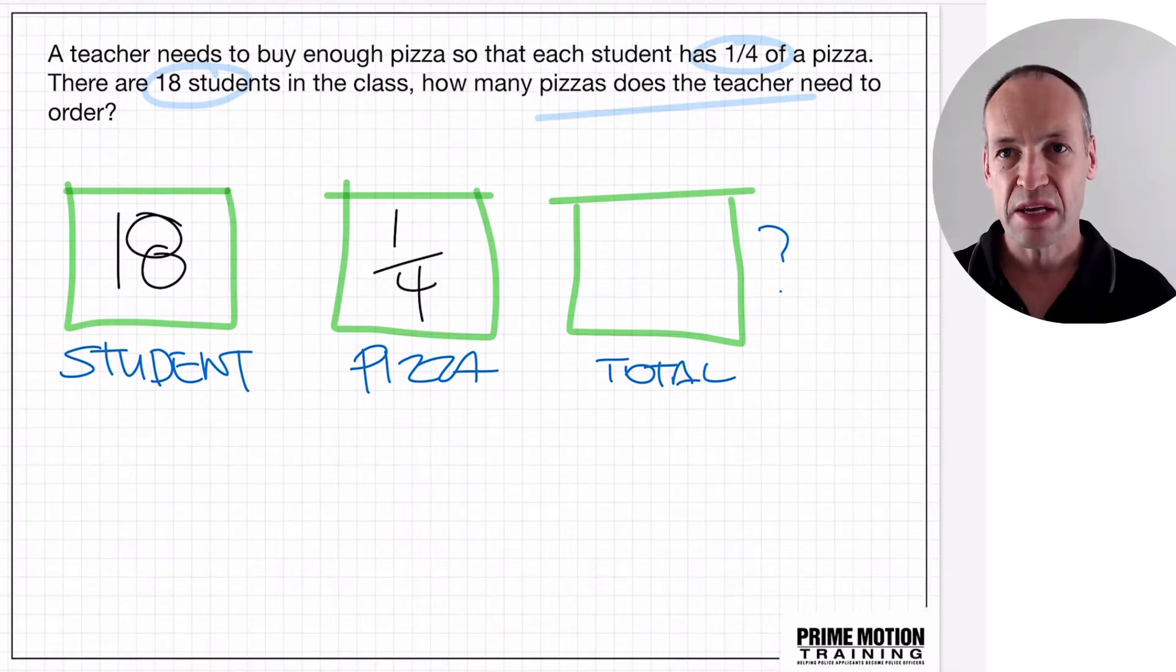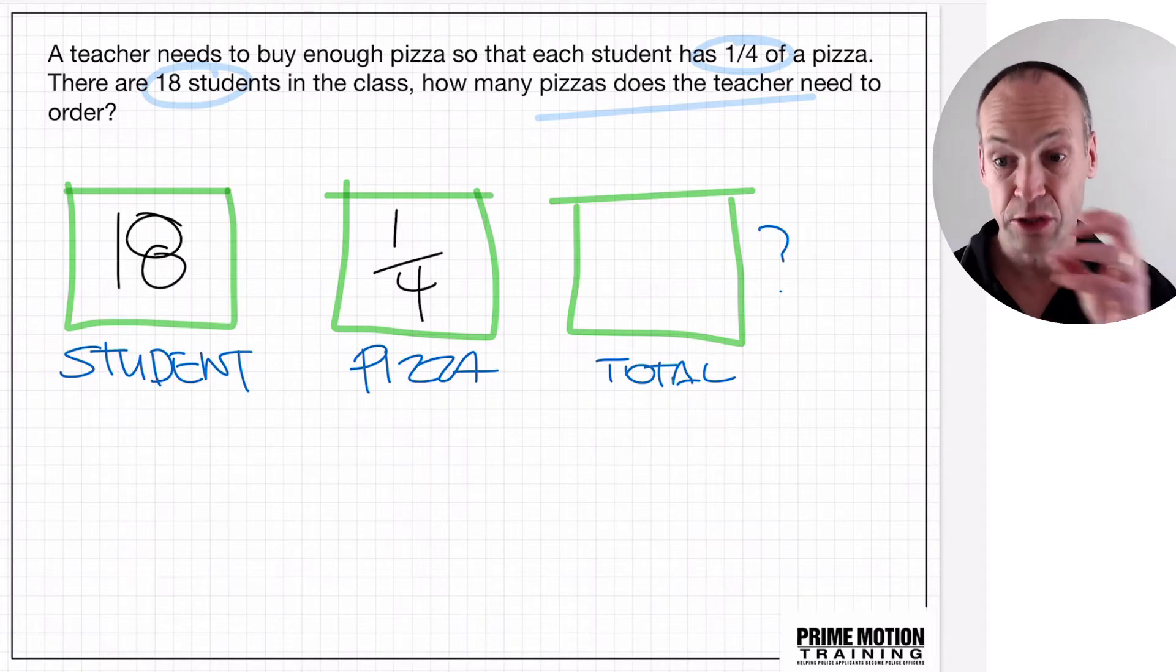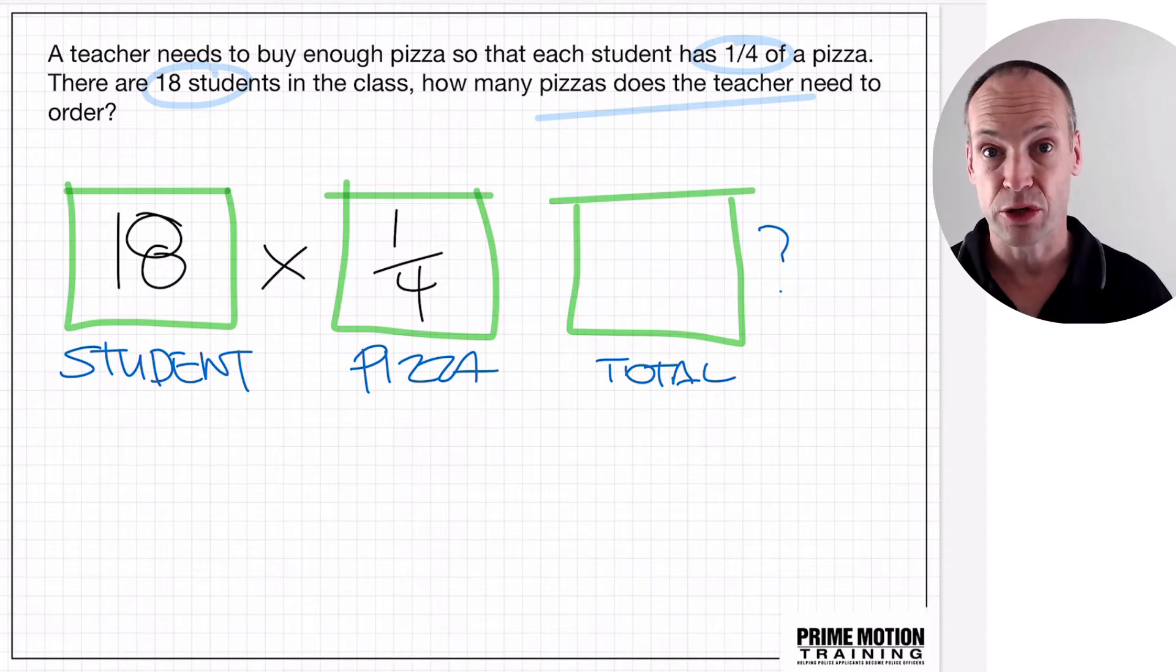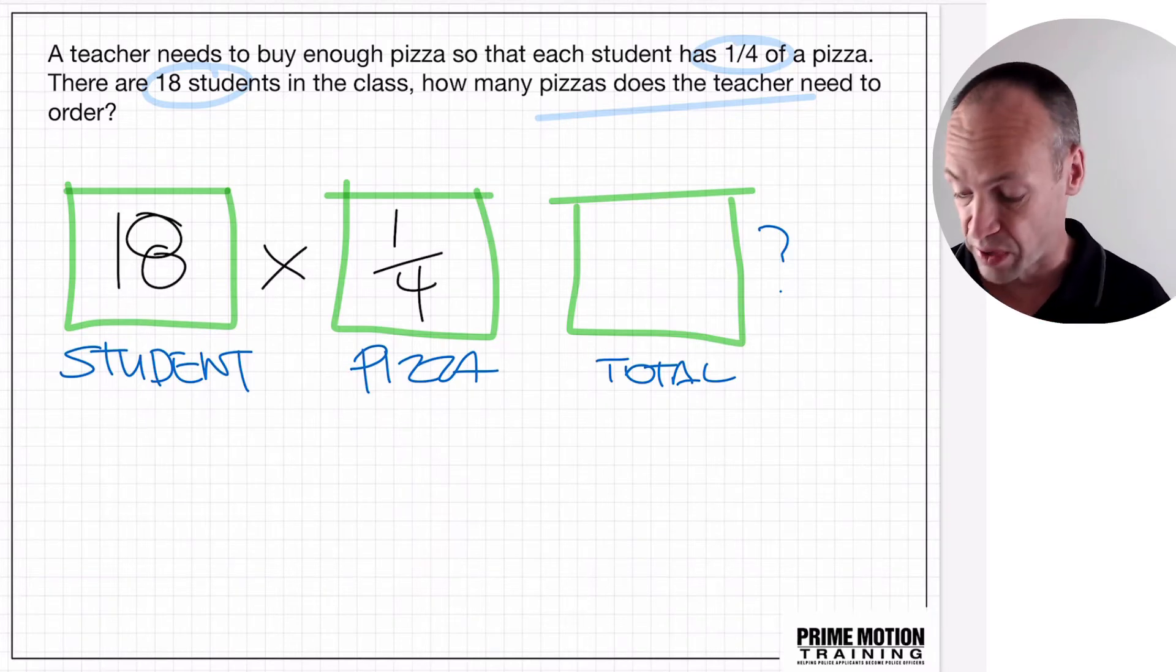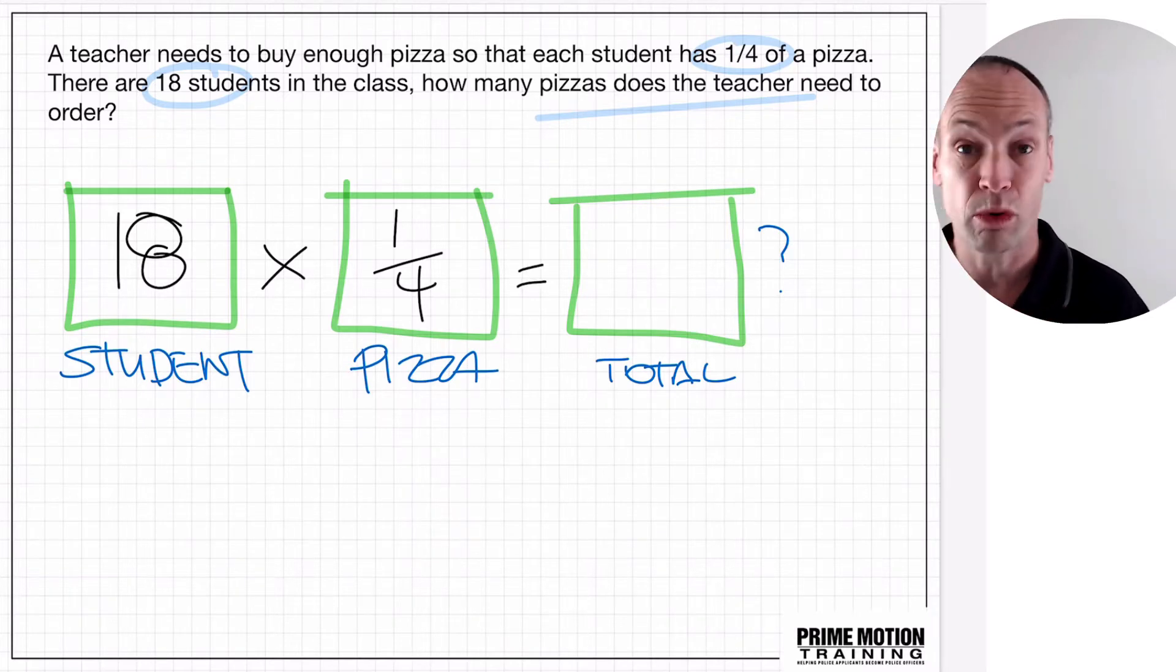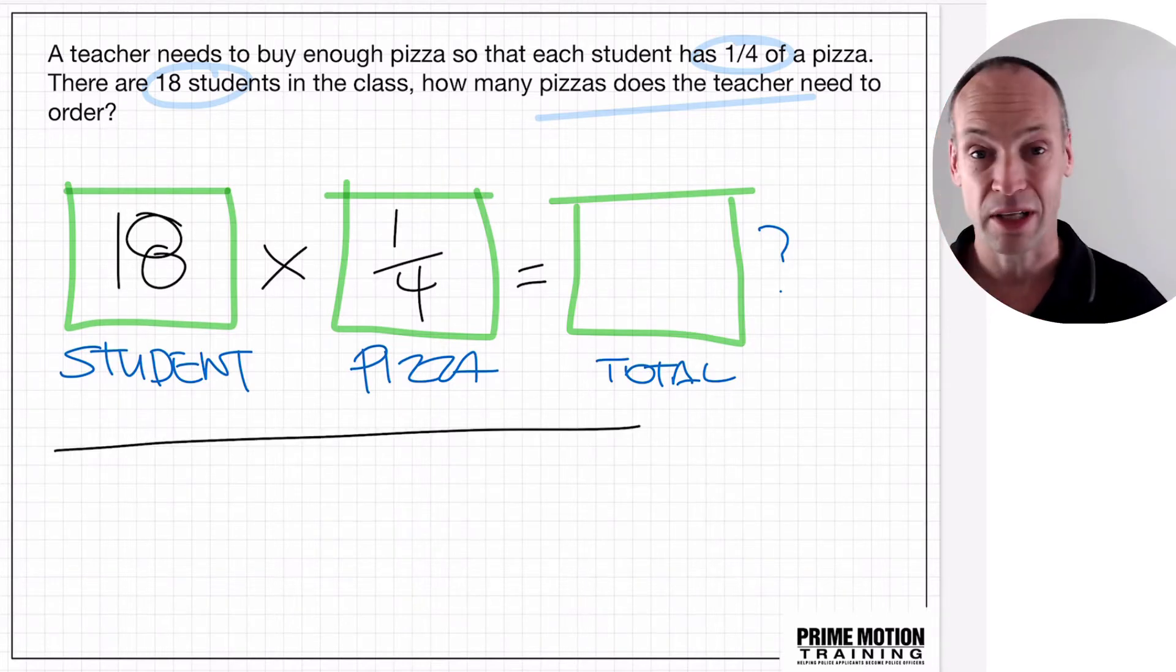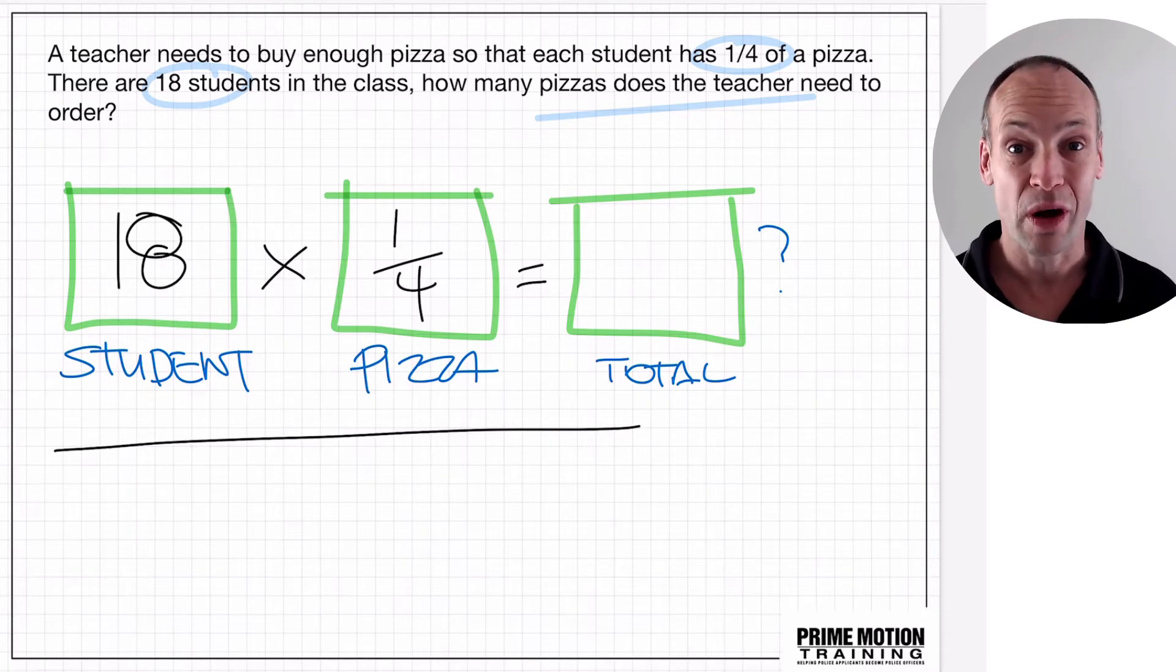But if you replace that two pizzas each back to the quarter, the same calculation will give us our answer. 18 students times two pizzas, actually no, let's just limit it to a quarter each. 18 students times a quarter of a pizza equals whatever that comes out to be. Now, we've interpreted what calculations required, now we need to calculate or multiply that particular question there, 18 times a quarter.